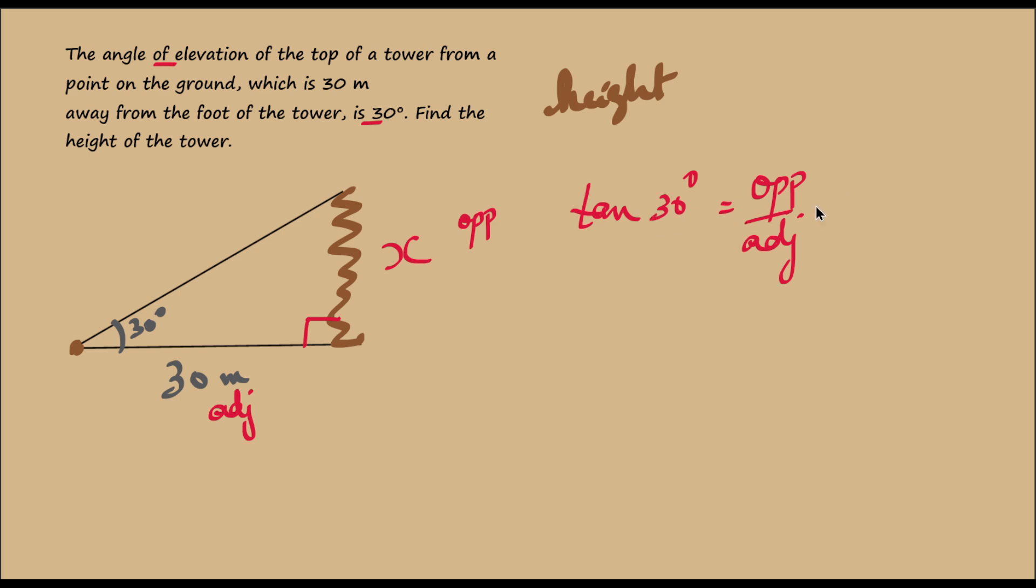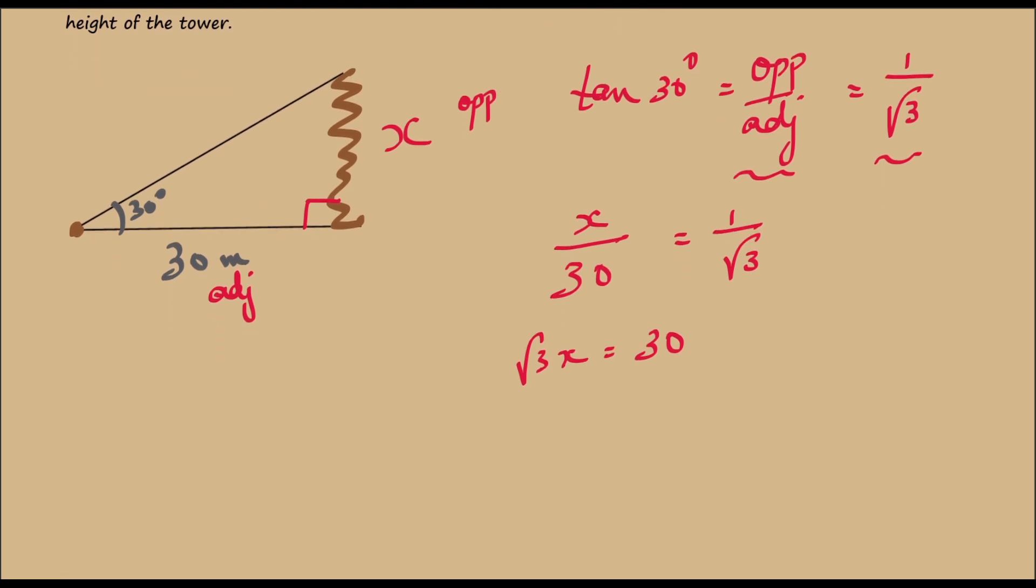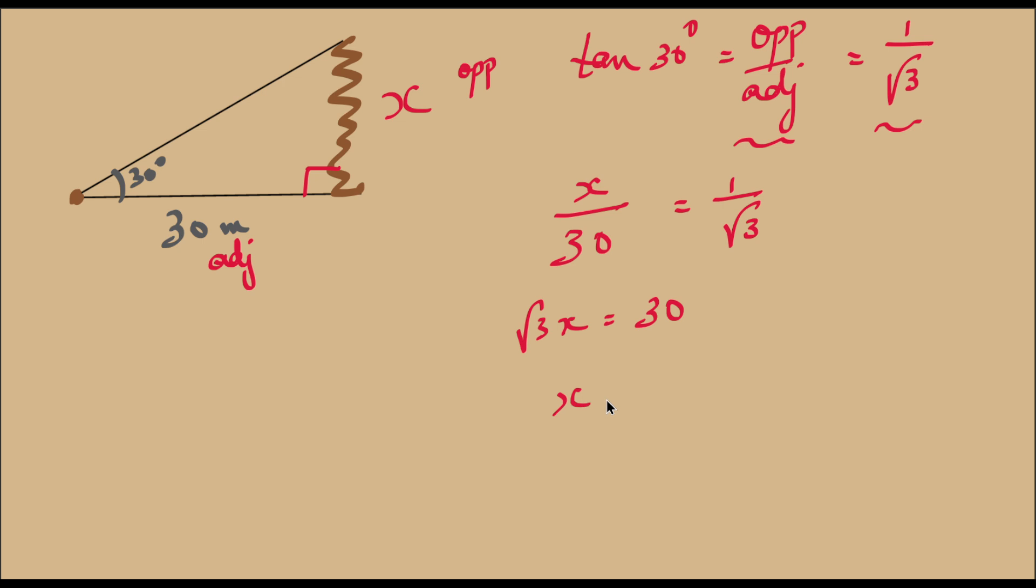So tan 30, opposite by adjacent, is 1 by root 3. And we know the length of the adjacent side, so we can rewrite this ratio as x by 30 equals 1 by root 3. And now we can easily find x, because root 3 x equals 30, and x equals 30 by root 3.